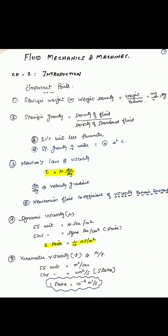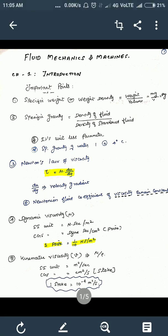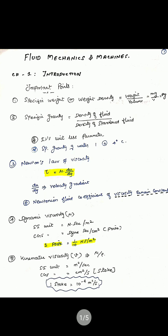Next, dynamic viscosity: the SI unit is Newton-seconds per meter square; the CGS unit is dyne-seconds per centimeter square, also called Poise. One Poise equals 1/10 Newton-seconds per meter square. Next, kinematic viscosity nu equals mu divided by rho; SI unit is meter square per second, CGS unit is centimeter square per second.